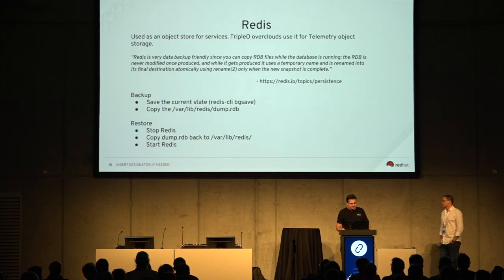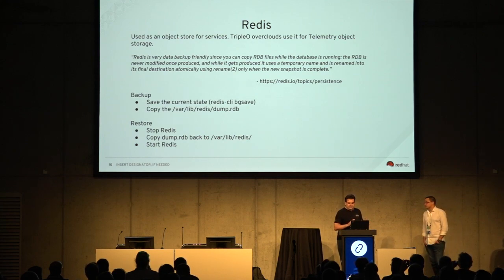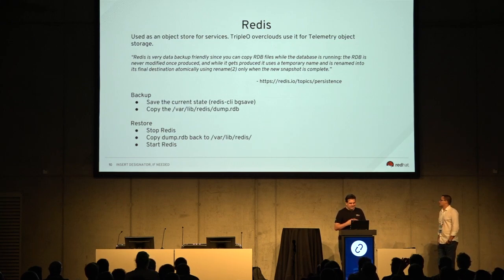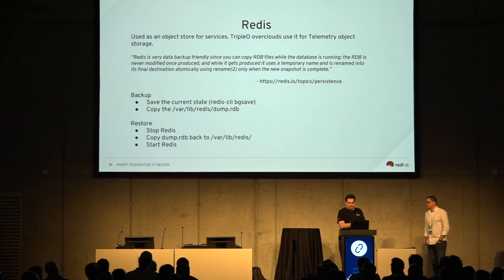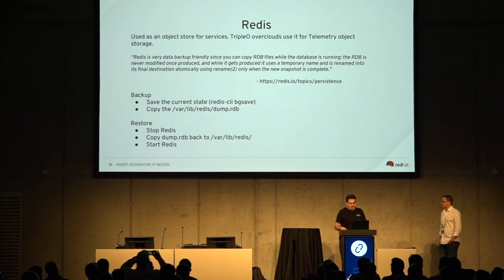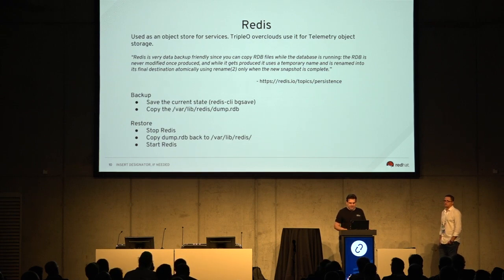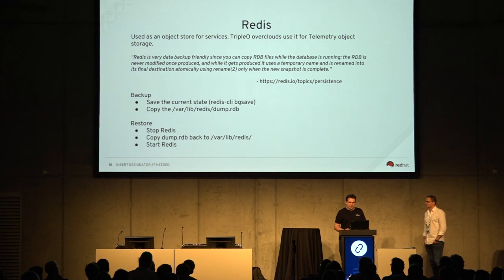For Redis, which is used as an object store for services in TripleO overclouds including some telemetry object storage, backup is simple and versatile. It stores state as a dump.rdb file — just copy that file to a secure location. To restore: stop the service, copy the dump.rdb file back to its original location, and restart the service.